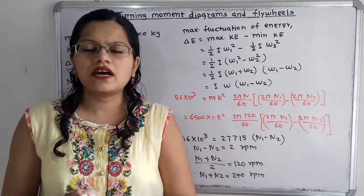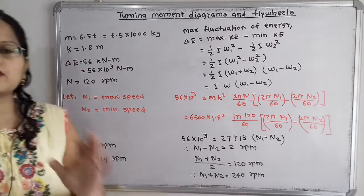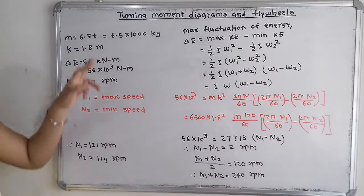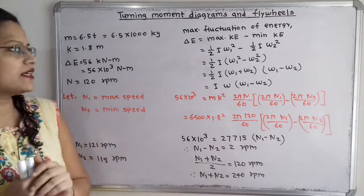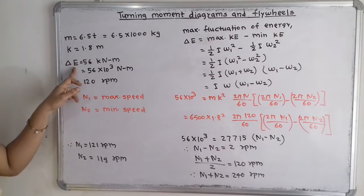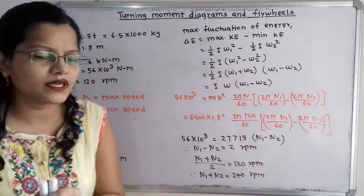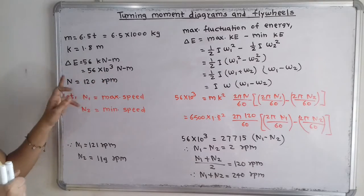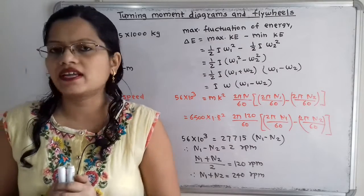Let us first understand the given data. Here mass is given in tons, so we have to convert it into the standard unit in kilograms, that is 6.5 into 1000 kilograms. Then the radius of gyration is 1.8 meters. The fluctuation of energy is given as 56 kilonewton meter, and the standard unit is newton meter, so we write 56 into 10 raised to 3 newton meter. Then N, the mean speed, is 120 rpm.